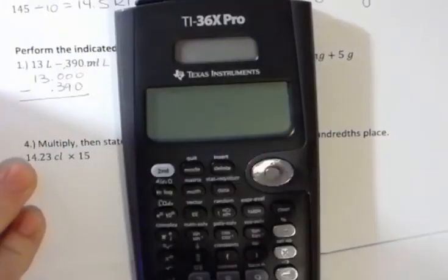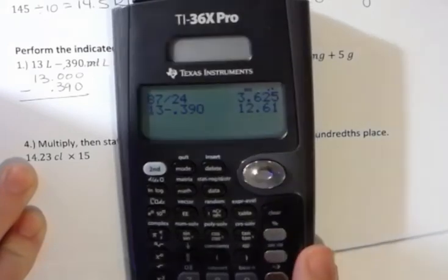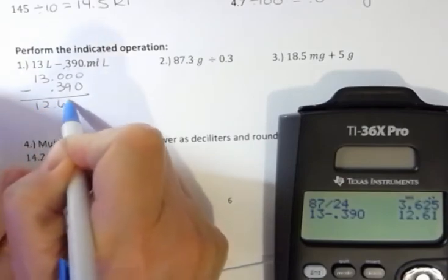So I would say 13 minus 0.390, and that is 12.61, and that would be liters because I changed them both into liters.